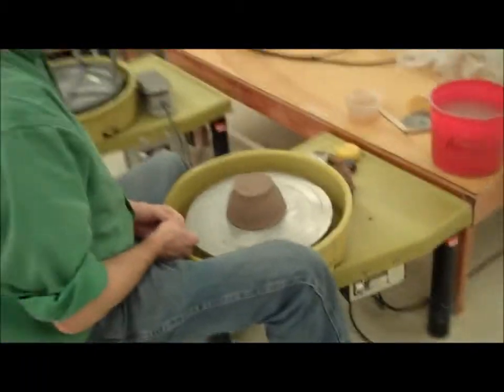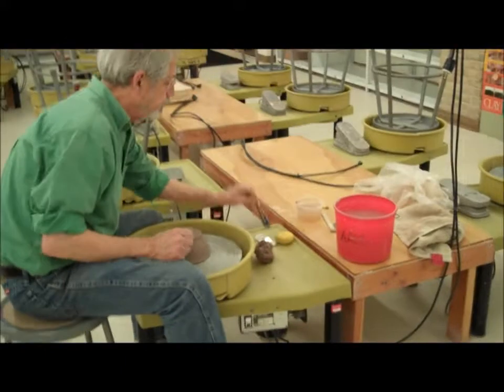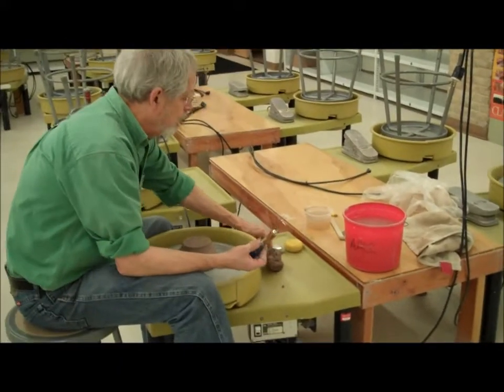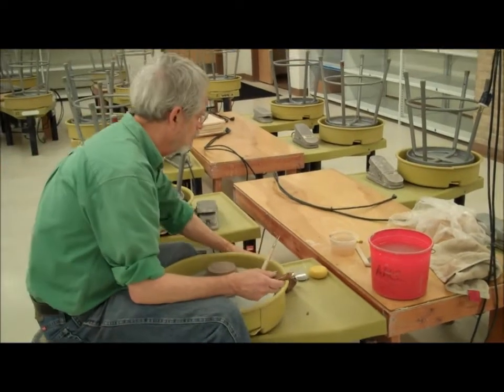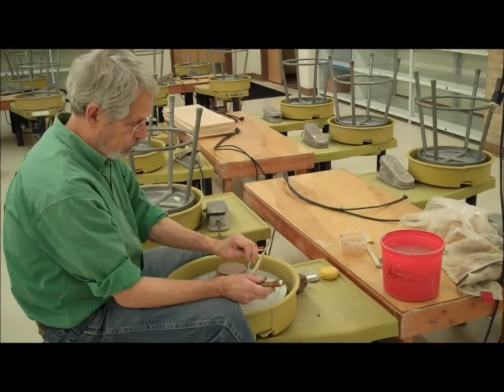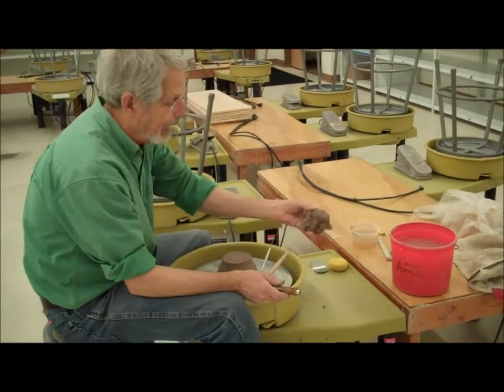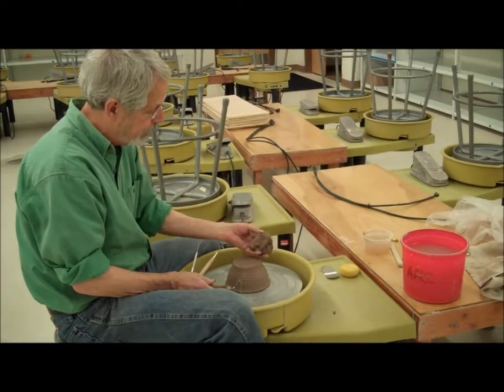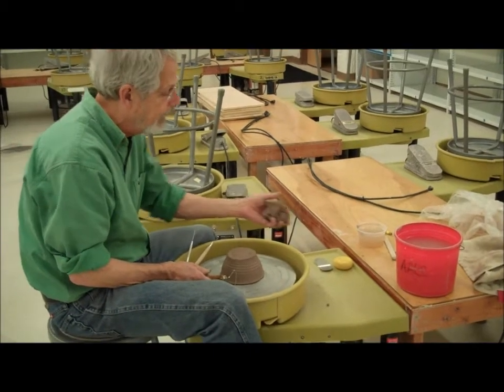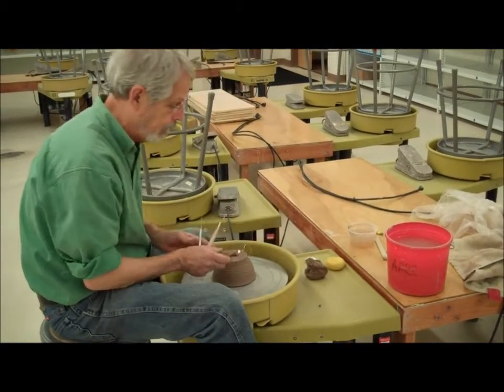So you set your wheel up just as you did before. The tools that you're going to need for this are your small trimming tool, possibly your bigger trimming tool and your needle tool. You'll also need clay of the same color that you made your piece out of. So in this instance this is brown stoneware and I've got a big handful of brown stoneware clay.